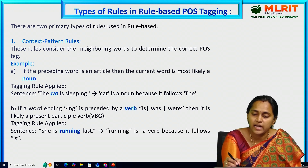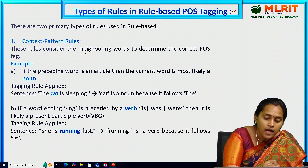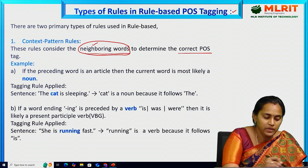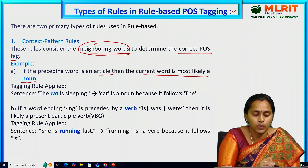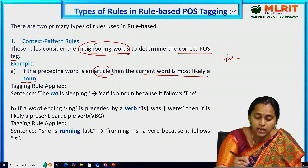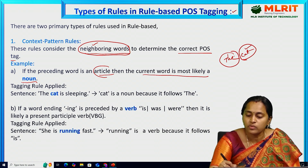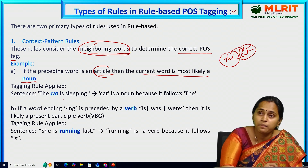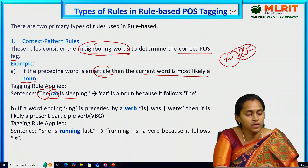Now let's see the types of rule-based POS tagging. The first type is context pattern rules. These rules consider the neighboring words — not all the words — to determine the correct POS tag. For example: if the preceding word is an article, then the current word is most likely a noun. Applying this rule to 'the cat is sleeping' — 'the' is the article, so 'cat' is a noun. This is the meaning of context pattern rules.